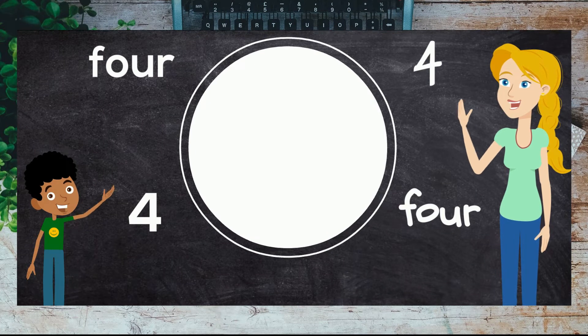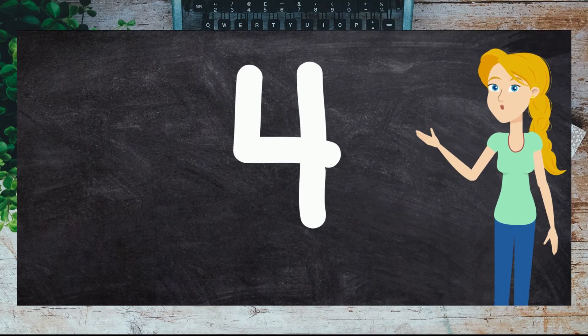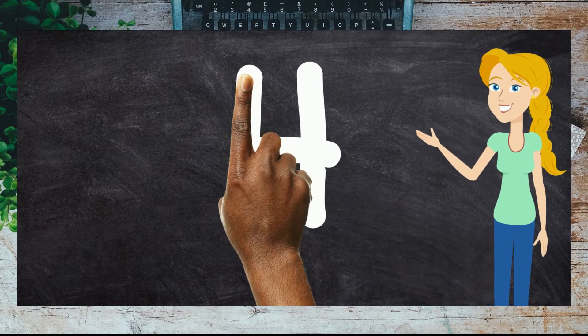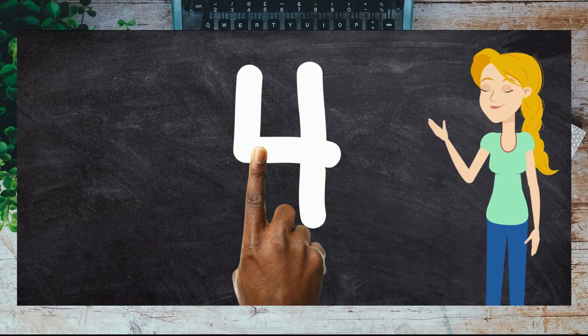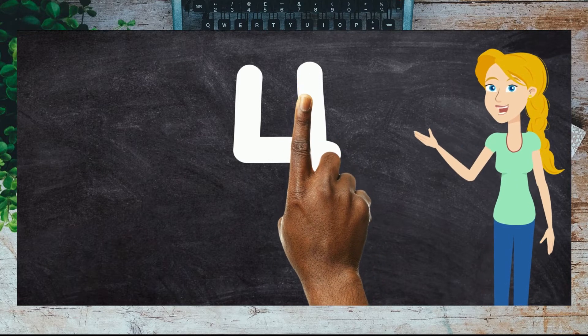Today we are going to learn about the number four. When writing the number four, you start at the top and draw a small line down to the middle, then a small line across, start at the top again and a big line down.